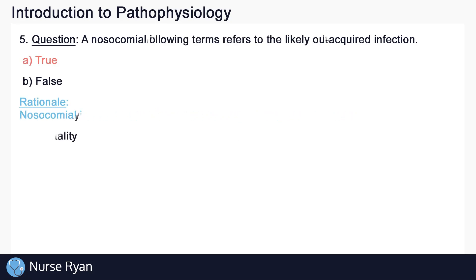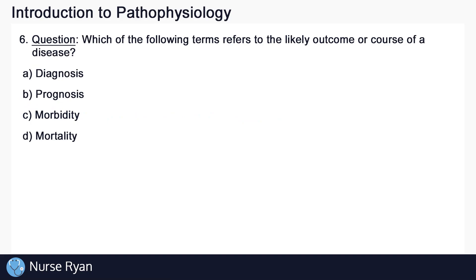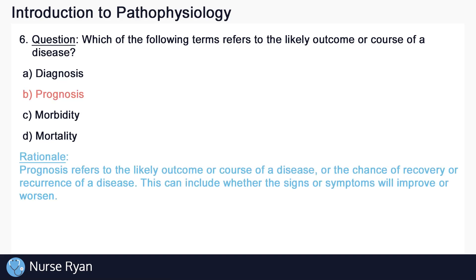Question number six: which of the following terms refers to the likely outcome or course of a disease? The answer here is B, prognosis. Prognosis refers to the likely outcome or course of a disease, or the chance of recovery or recurrence of a disease. This can include whether the signs and symptoms will improve or worsen.